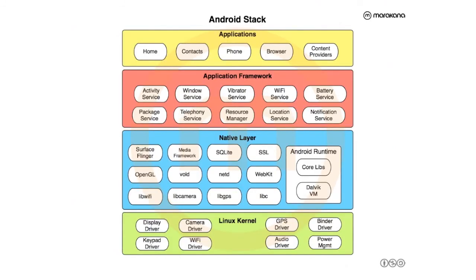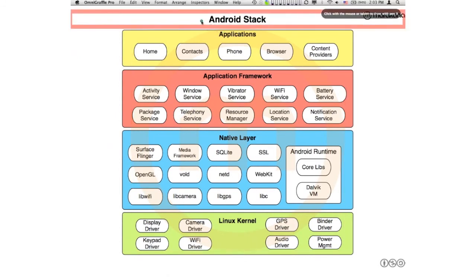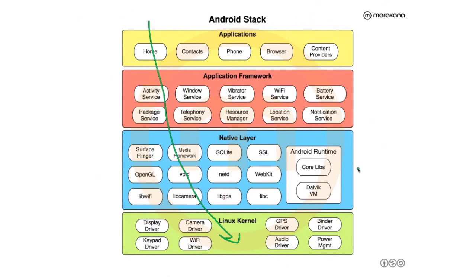By a show of hands, how many of you have never seen a picture that looks like this? Okay, cool — that means you came to the right place. We're not going to be talking about the stack; we're going to be talking about the intersections through the stack. Think of it as a way of going from the top of the stack, down through the application framework, through the native layer, to the Linux kernel, discussing some of the services along the way. We'll look at only about 10 out of 60-plus services, but the idea is to get a taste of how they're put together, how they're similar in communication, and also how and why they differ.